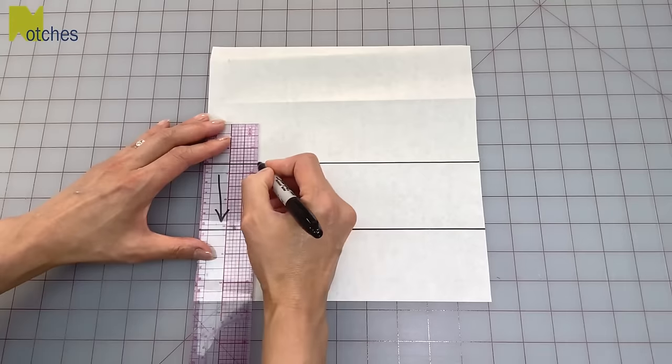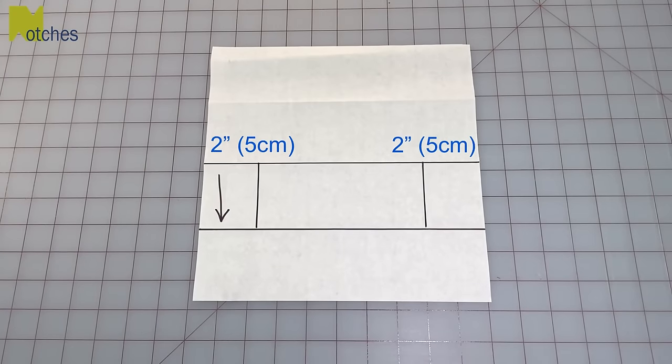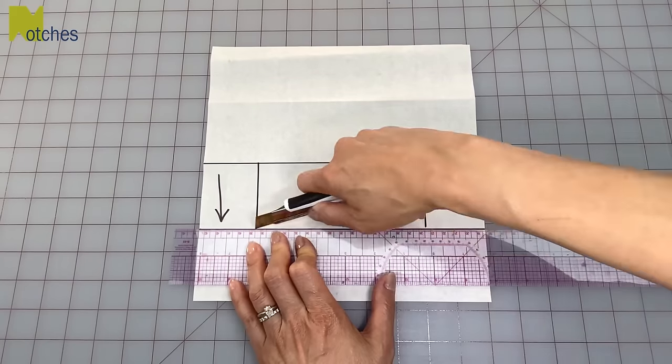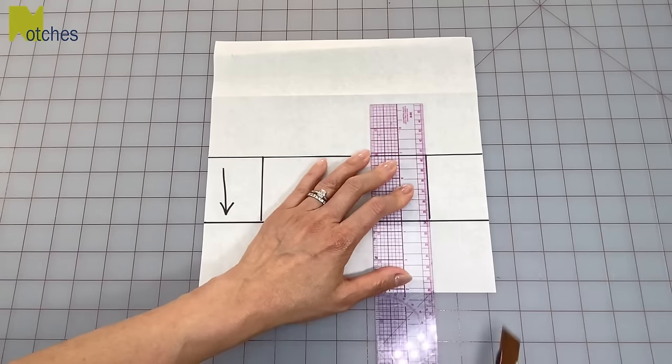Then on each side, draw a line 2 inches in from the edge. This will be the very front of the strap if you plan on doing embroidery or you want a specific part of a print.